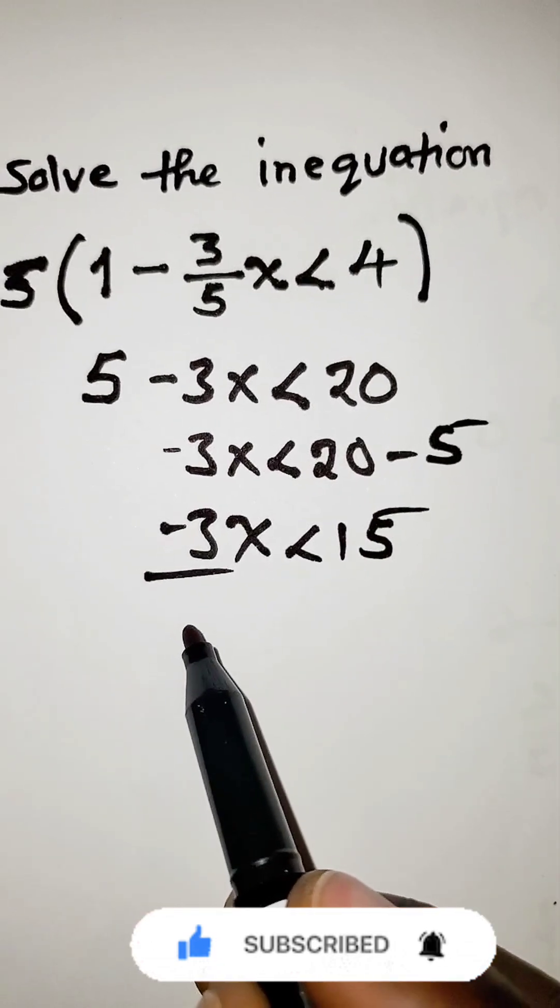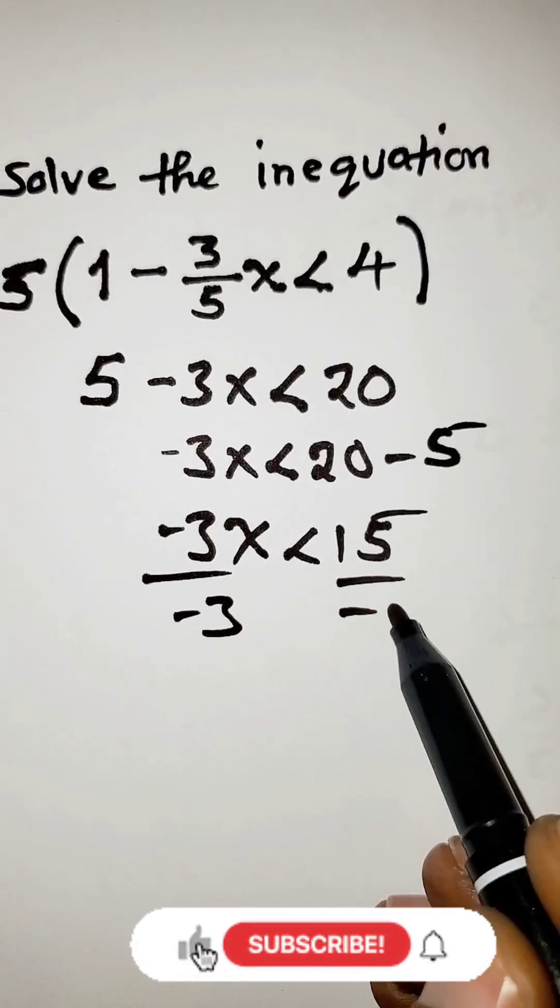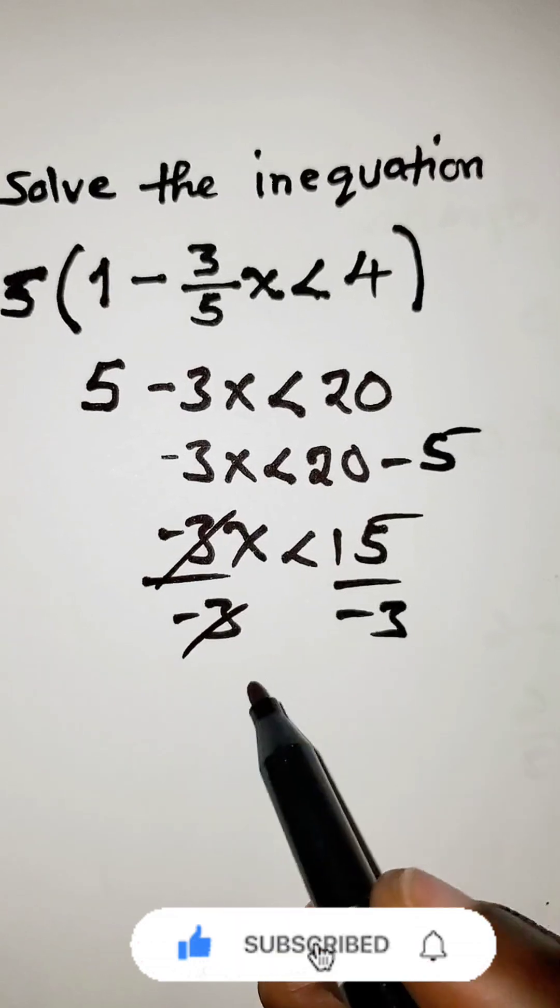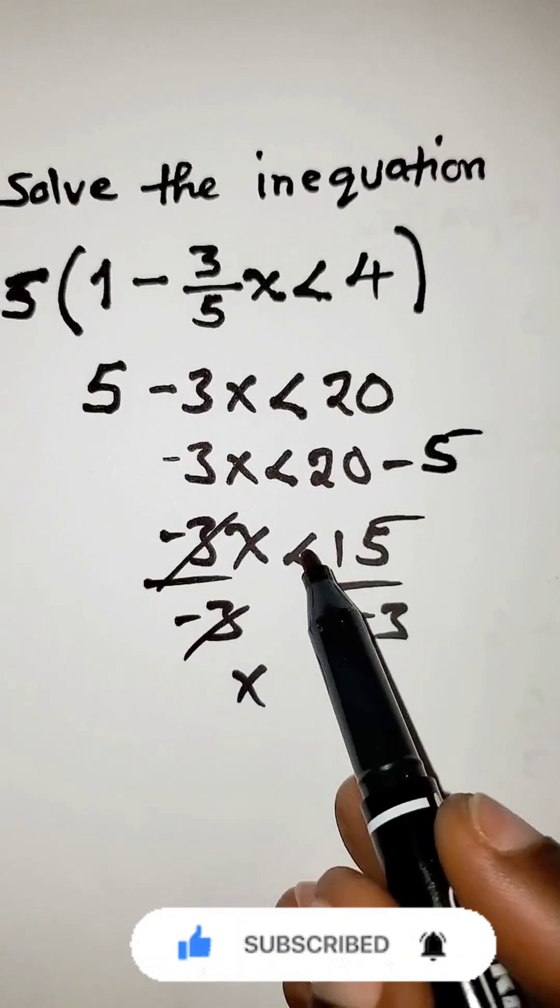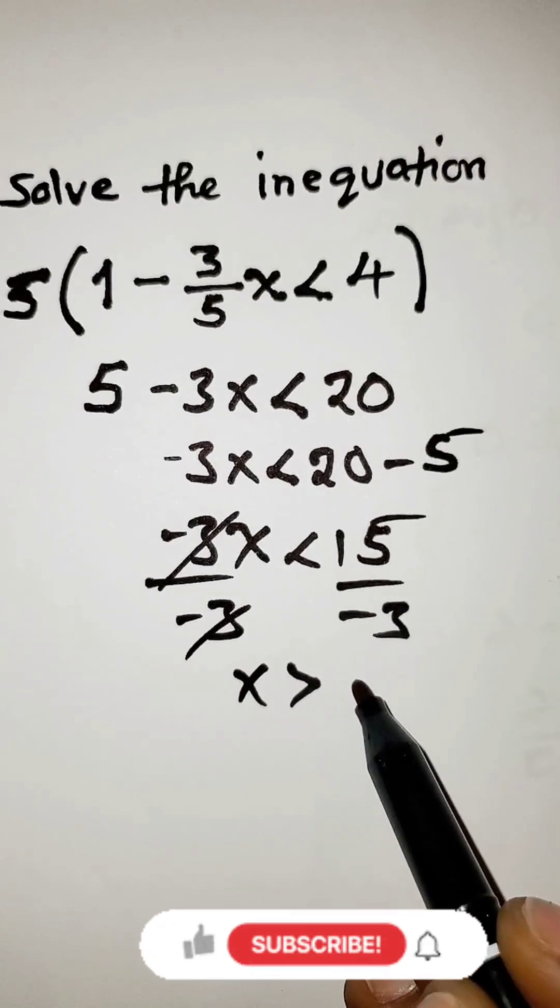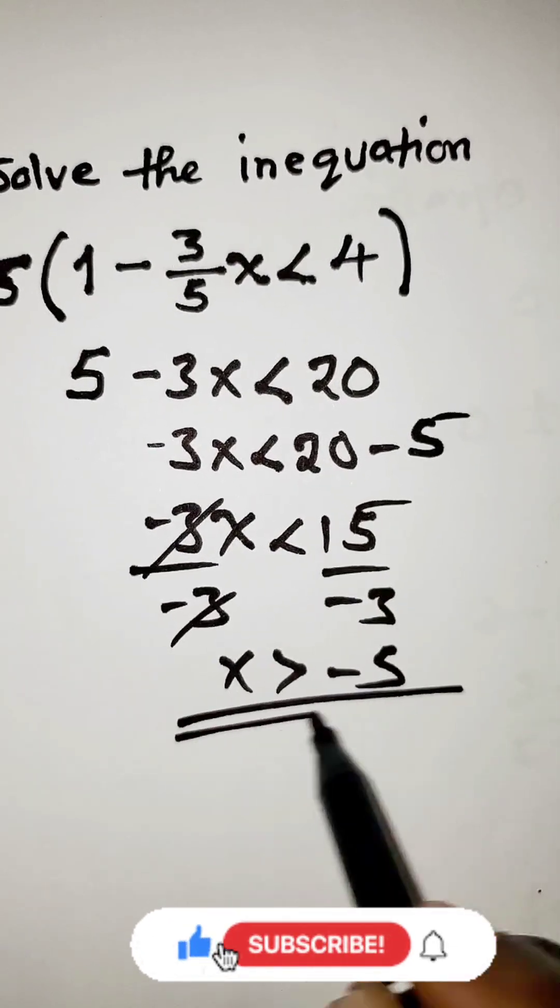And then we divide both sides by negative 3. X therefore, since we have divided by negative, the sign changes to greater than. Negative divided by positive is negative, 15 divided by 3 is 5, and this is the answer.